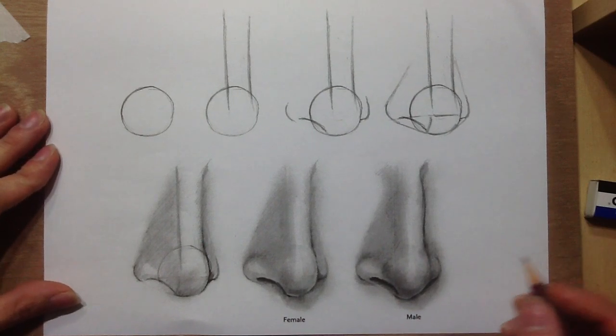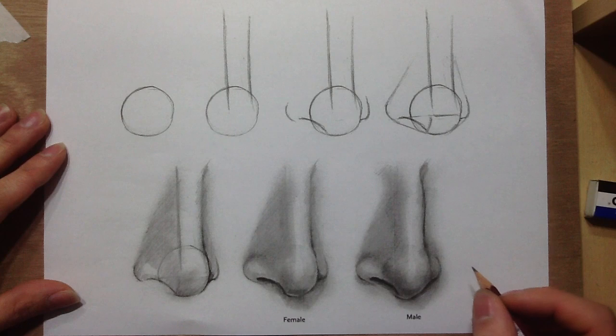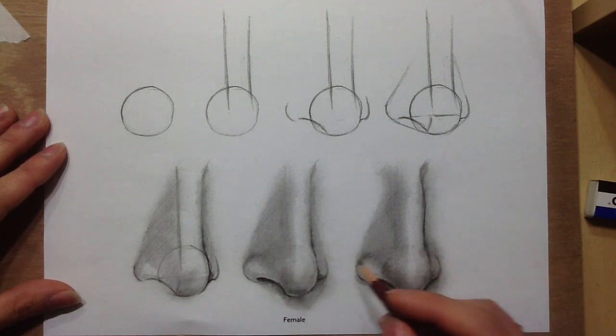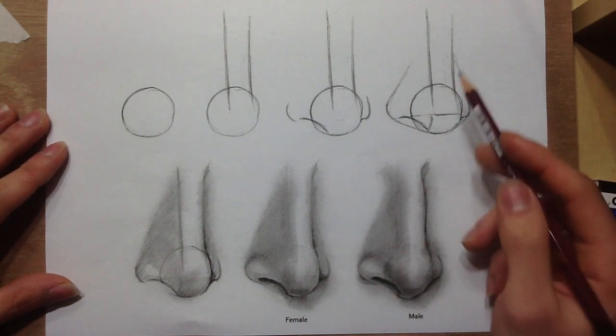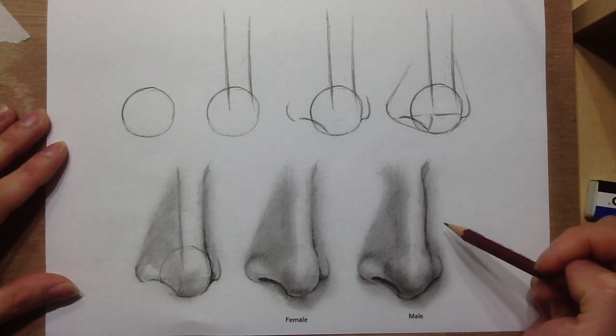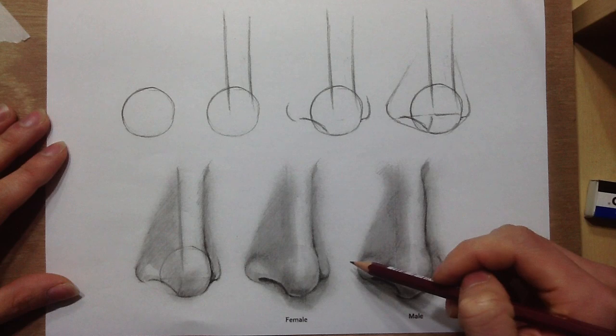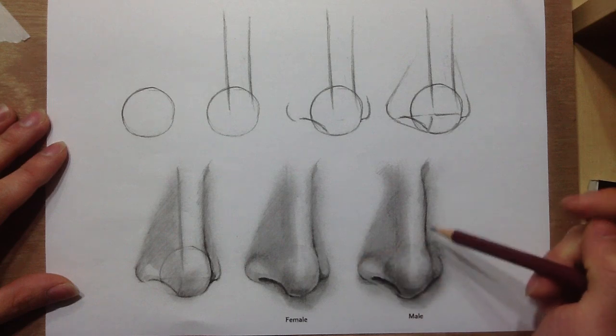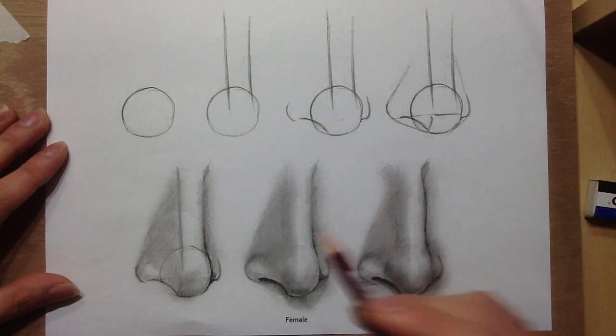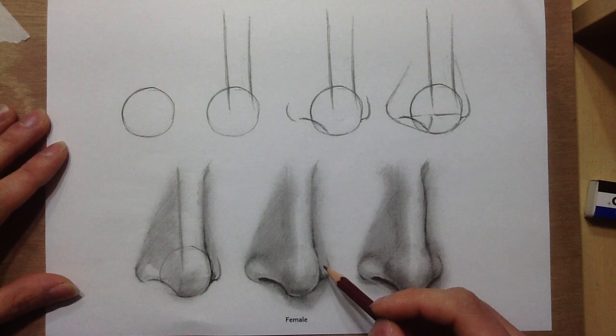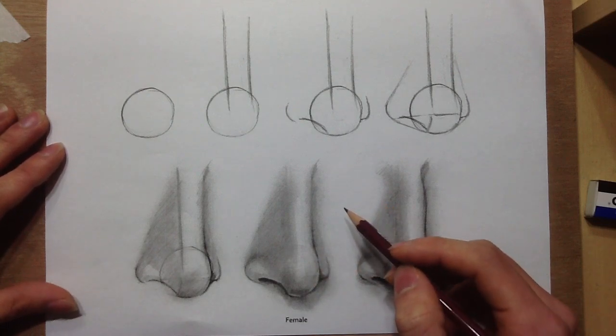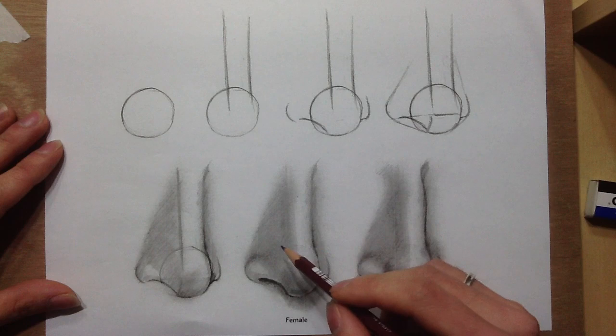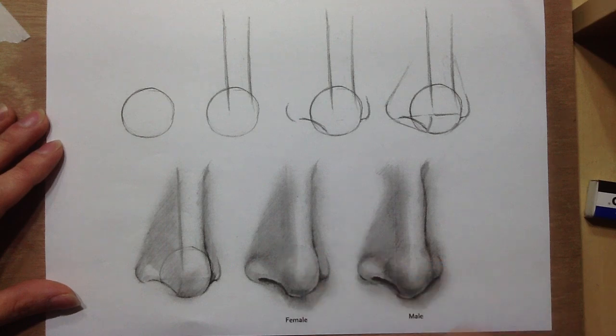Now I want to get into the male and female nose. Now they're actually quite different, quite similar. The construction is exactly the same. You can use the same guidelines for the male, as well as the female. But what's different is, the girl's nose, you really want to keep it very simple. You don't want to add any bumps. You want to keep the nostrils smaller, more dainty.